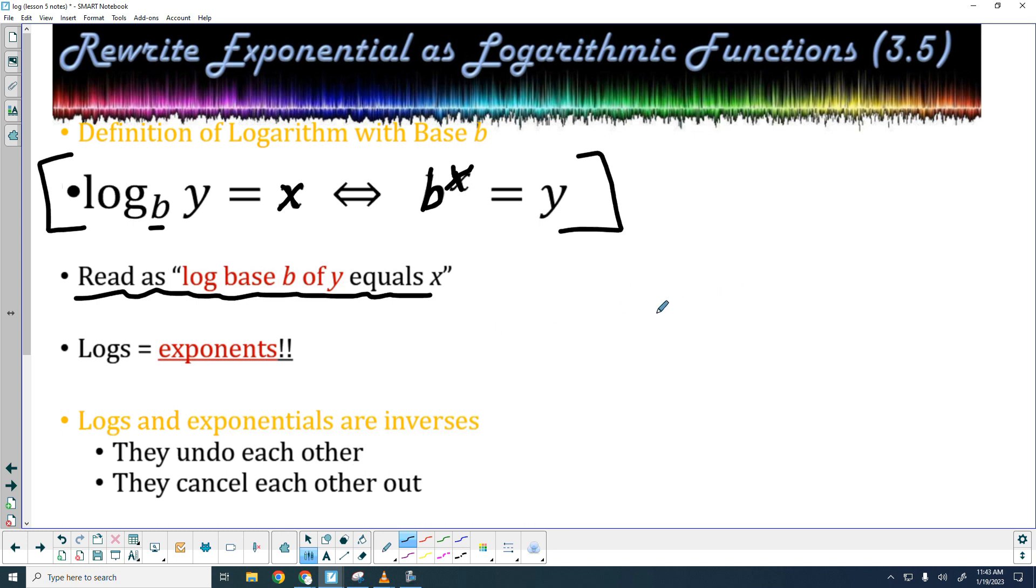If I were going to just start off with a really basic example, we know that 5 squared is 25. In this example, 5 is my base, so that's my B. X would be 2, because that's my exponent. And Y would be 25, because that's what it equals.